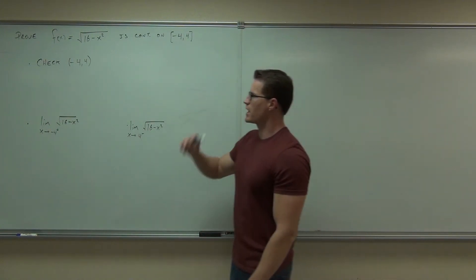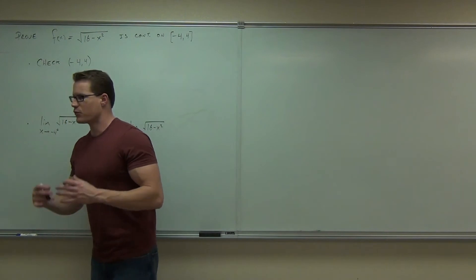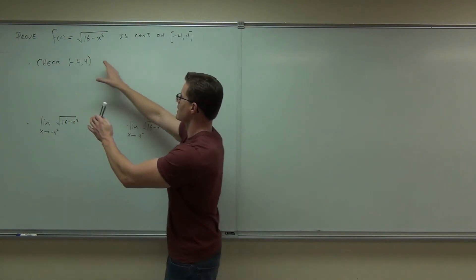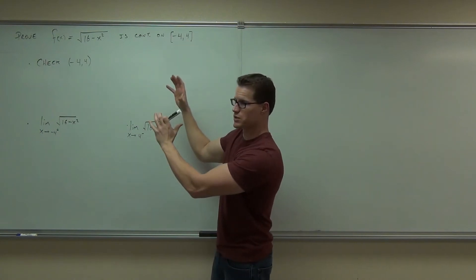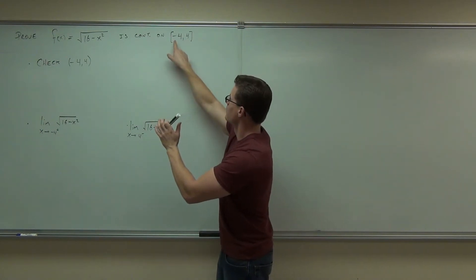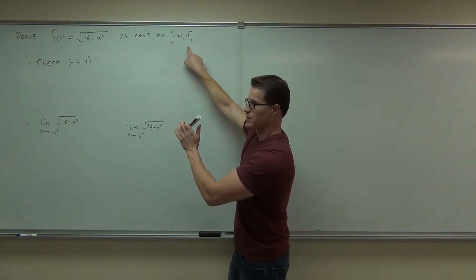First thing we're going to do is check the open interval negative 4, 4. So we're going to check this thing to say that okay at least we know we're continuous from this point to this point but not inclusively. Then we'll have to check the endpoint negative 4 and we'll check the endpoint positive 4.